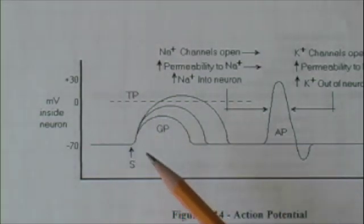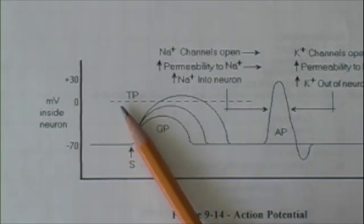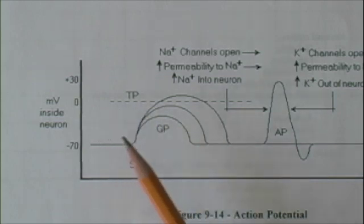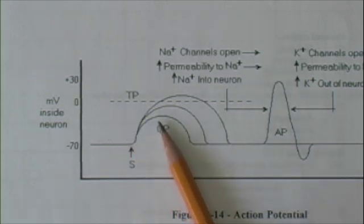Let's assume for example in this cell the graded potential is around zero. Now keep in mind it's not always that in different cells. Would this graded potential cause a nerve impulse? No. And why not? Because it does not reach threshold.